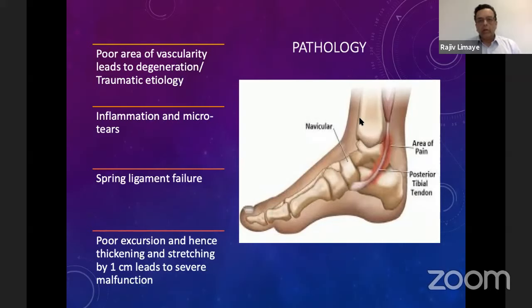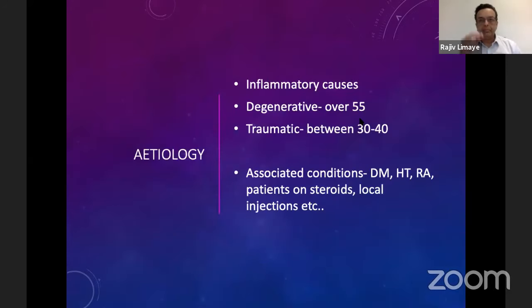Recurrent inflammation and micro tears within the tendon can cause further inflammation and pain. The spring ligament — the calcaneonavicular ligament — is one of the most important ligaments in this region, and it then fails. Any lengthening of the posterior tibial tendon, even by a centimetre, can lead to severe malfunction. We see various causes: inflammatory causes such as in rheumatoid patients, traumatic conditions especially in younger patients, and degenerative causes very common in women over the age of 55, especially those with comorbidities such as diabetes, hypertension, rheumatoid arthritis, patients on steroids, and sometimes even after injections into the tender areas.